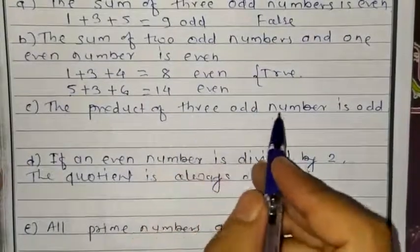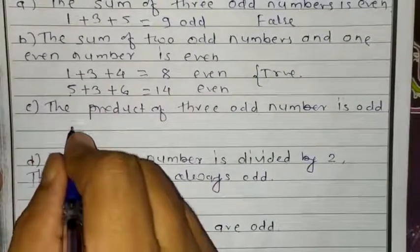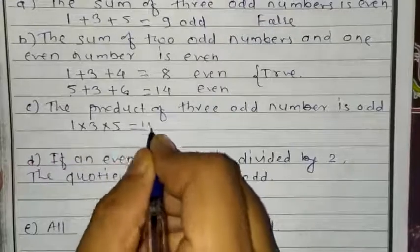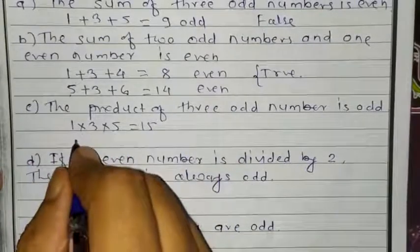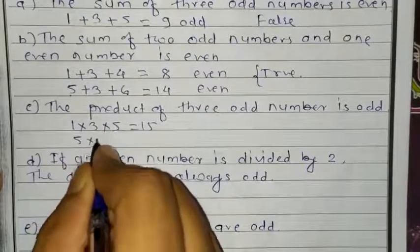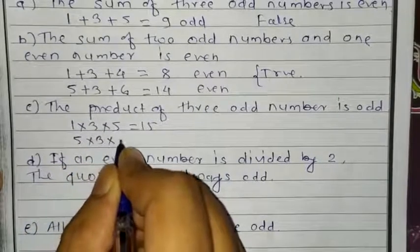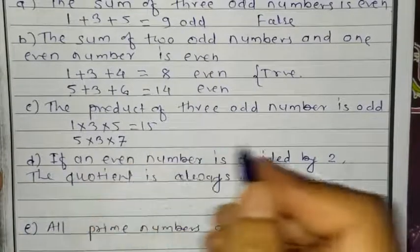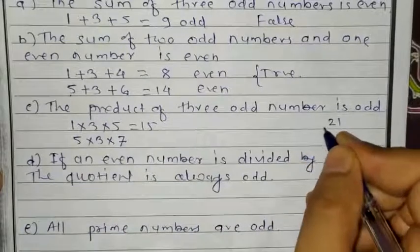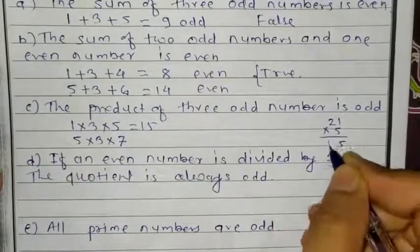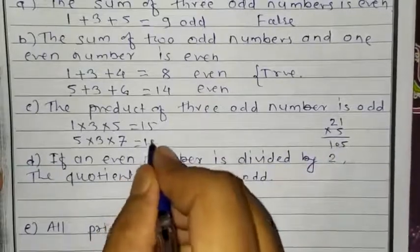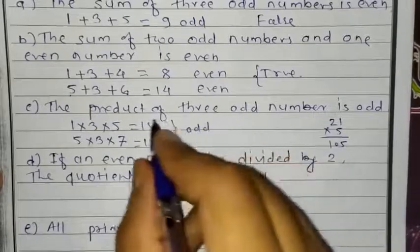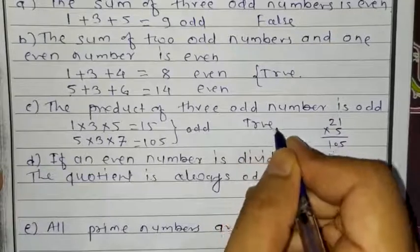Part C: the product of 3 odd numbers is odd. I am taking 3 odd numbers 1, 3, 5. Product means multiplication. The answer is 15. Taking one more example: 5, 3, and 7. So 7 into 3 is 21, and 21 into 5 is 105. Now check both numbers — they are nothing but odd. So the product of 3 odd numbers is odd, and it is true.